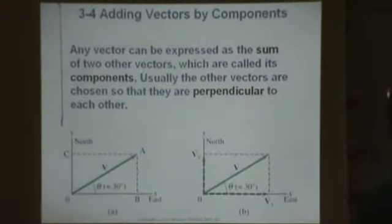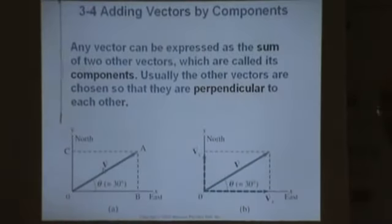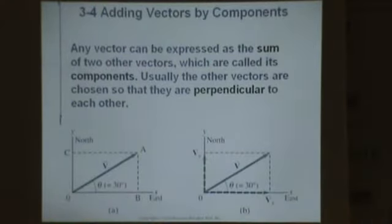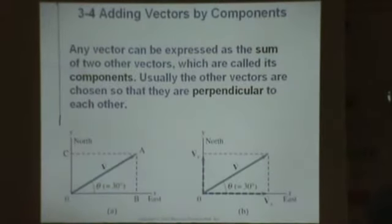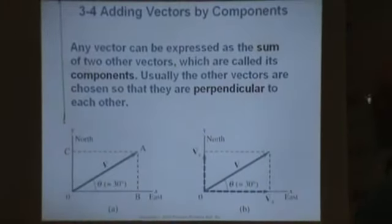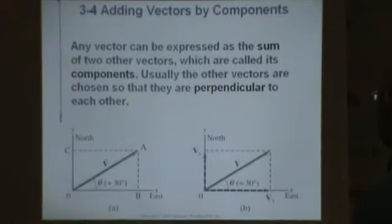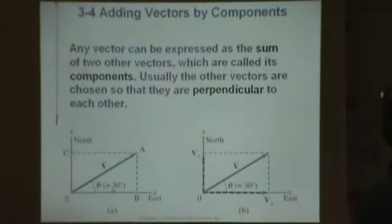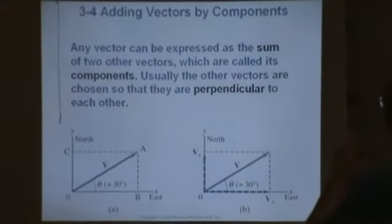Here's an example. Let's say we have a vector, vector v, right there. What are the components of this vector? To find the components of this vector, I need to put it in a coordinate system. As you can see here, it's already in a coordinate system, an xy coordinate system. And it points in the direction 30 degrees relative to the x axis, or 30 degrees relative to east.